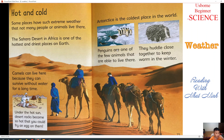Next part, we will learn about hot and cold. Some places have such extreme weather that not many people can live there. The Sahara Desert in Africa is one of the hottest and driest places on earth. Camels can live here because they can survive without water for a long time. The Sahara Desert is home to one of the few animals able to live there. They huddle close together to keep warm in winter.